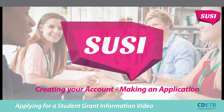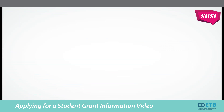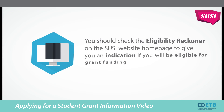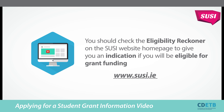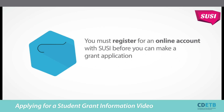Creating your account and making an application. You should check the eligibility reckoner on the SUSIE website homepage to give you an indication if you will be eligible for grant funding. You must register for an online account with SUSIE before you can make a grant application.